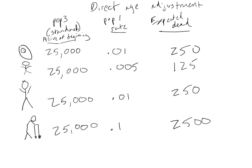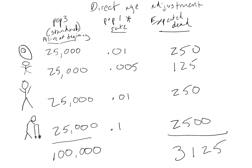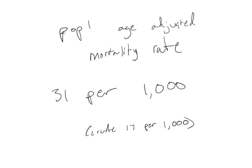In other words, we are taking the difference in age distribution between population 1 and 2 out of the equation by using the age distribution of a third population. In this slide, we are applying population 1's mortality rate to our standard population's age distribution to get the expected number of deaths for each age group. We then sum the total population and expected number of deaths and use these numbers to calculate our new mortality rate. In this case, our adjusted mortality rate for population 1 is 31 per 1,000.